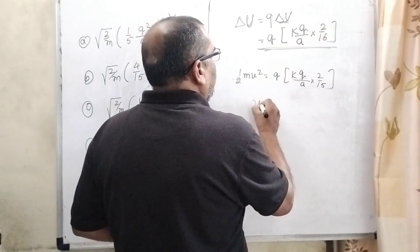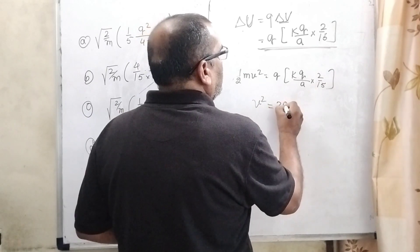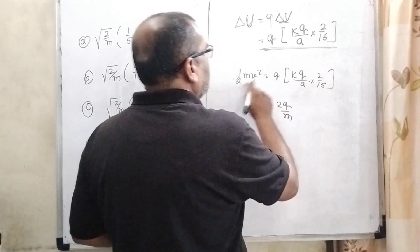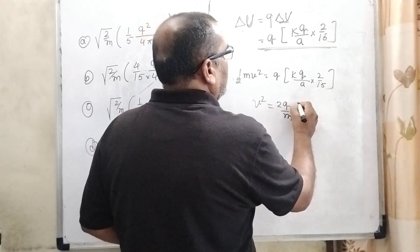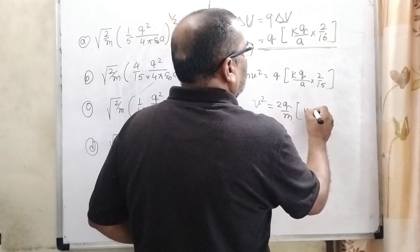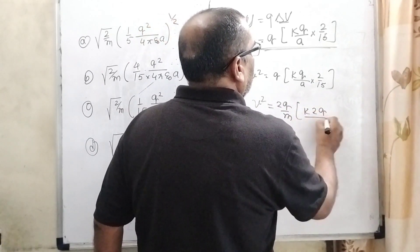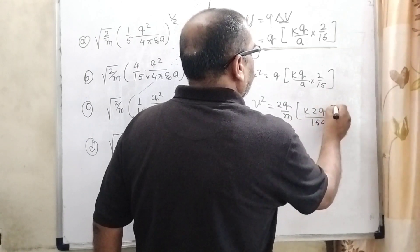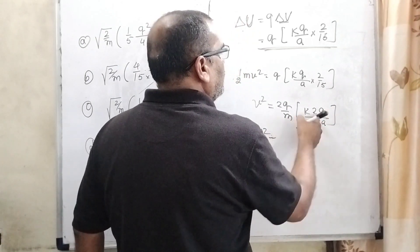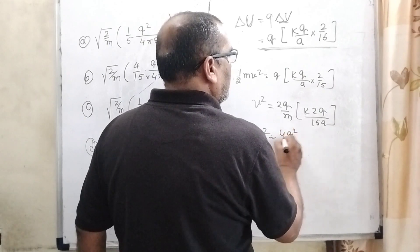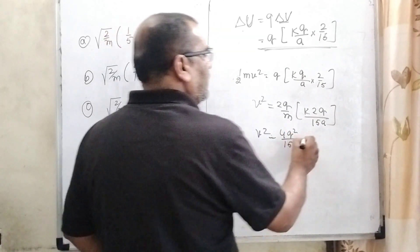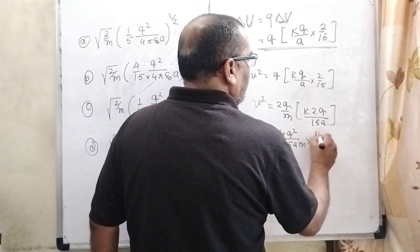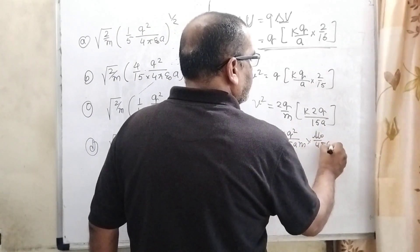Half mv squared equal to q squared, k by a into 2 by 15. Now v squared equal to 2q upon m, transposing this term to the right side, and k 2 becomes 4q squared by 15am. And what is the value of k? 1 upon 4 pi epsilon naught.